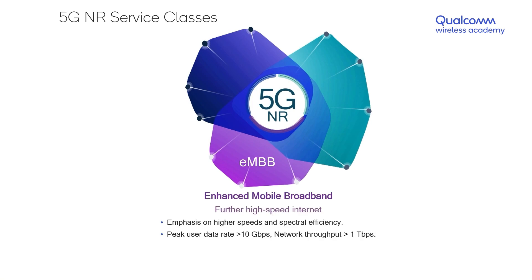We are about to discuss the three most prominent service classes that 5G is going to support, beginning with EMBB, or Enhanced Mobile Broadband. Simply put, it is further high-speed internet, where the emphasis is on higher speeds and better spectral efficiency. The peak user data rates could be upwards of 10 gigabits per second for individual users, and the aggregate network throughput could go as high as upwards of one terabit per second.